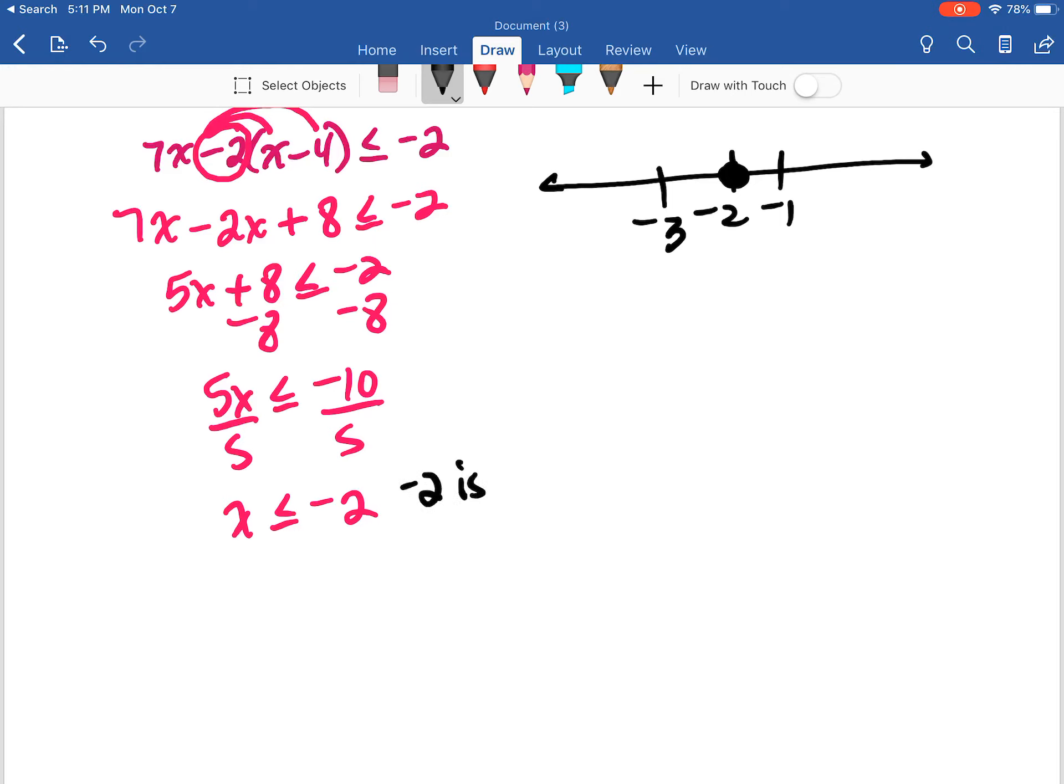Negative 2 is included in our range for x. So x can be... it can't be negative 1 because that would be to the right of negative 2, right? So we're talking about going this direction in terms of our inequality.